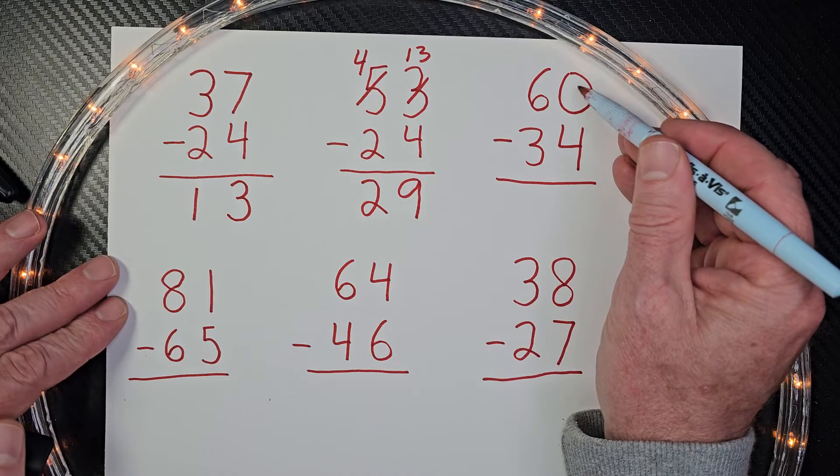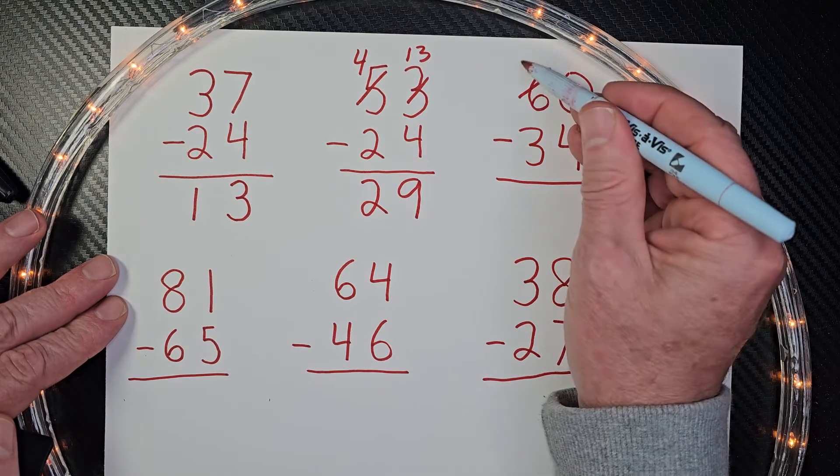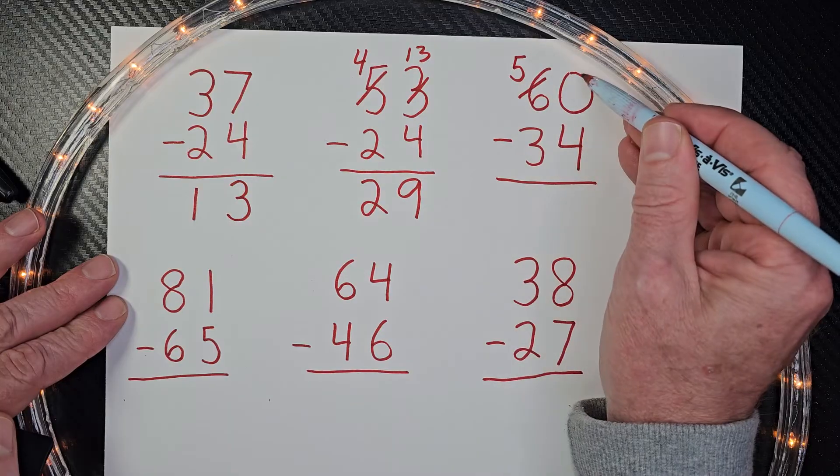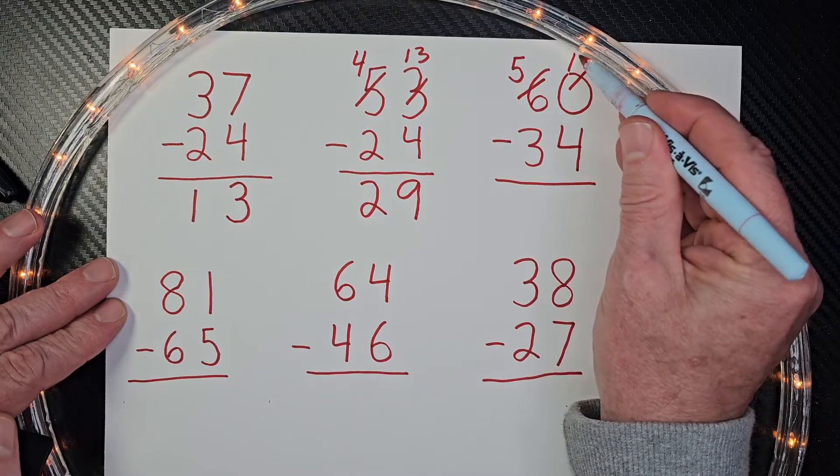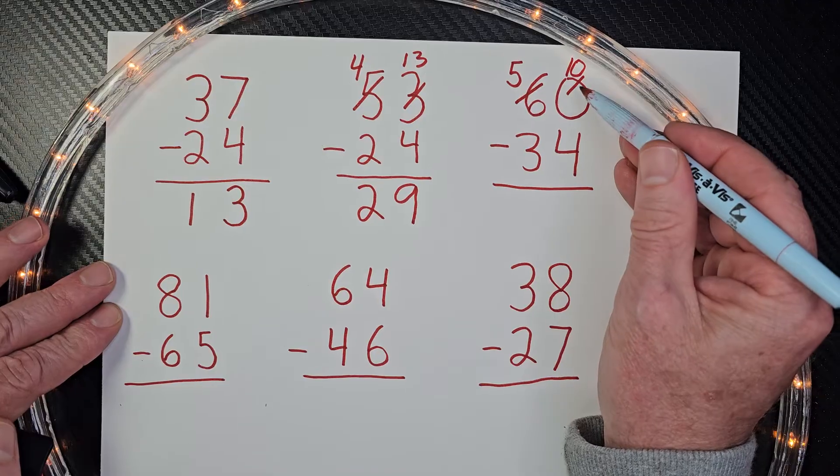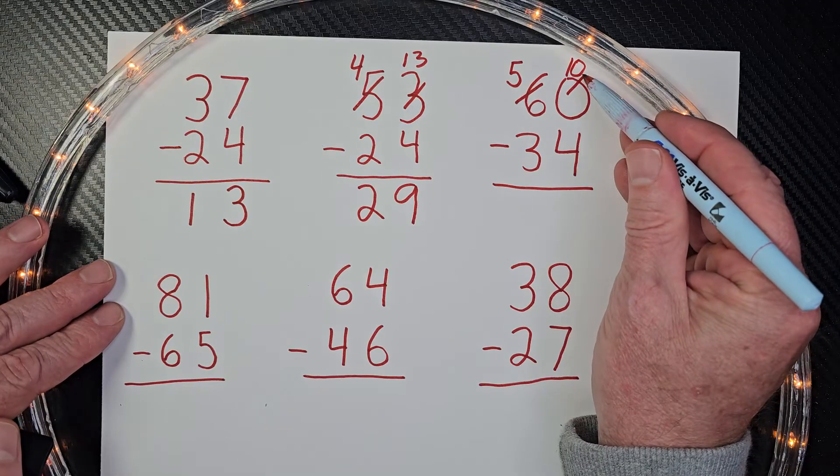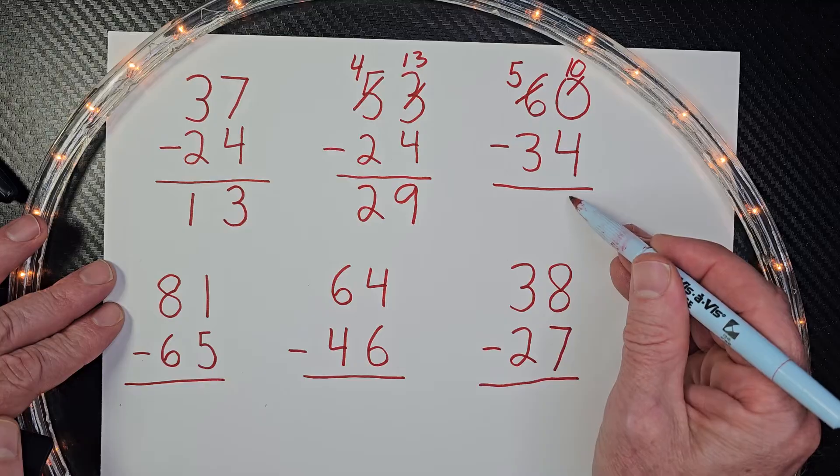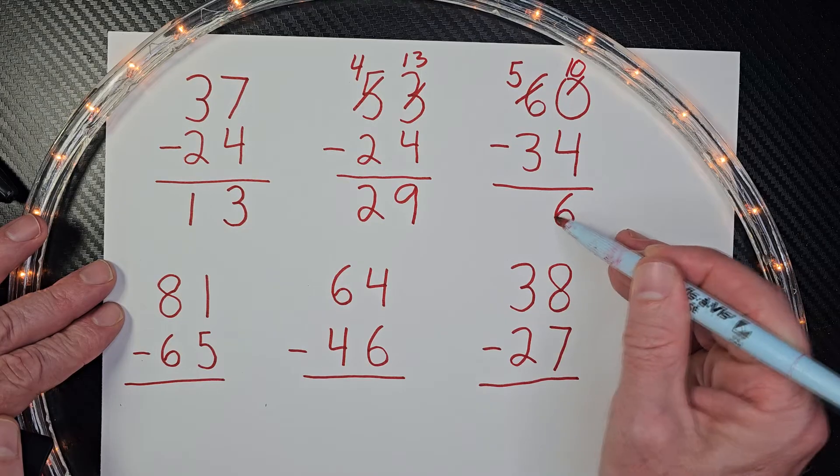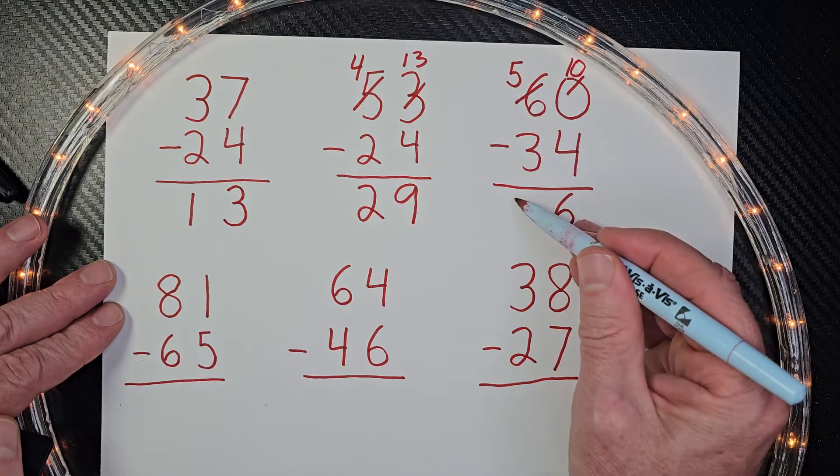So we need to make this number here bigger, even though this digit is a zero. So we borrow one from the six and this will be a five. And then this will be a 10 because we added 10 to the zero. Now we can go ahead and subtract. 10 minus four would equal six. And five minus three would equal two.